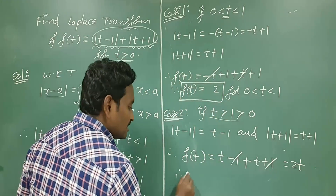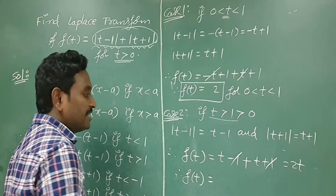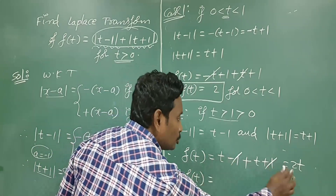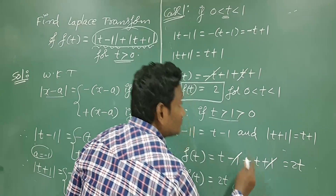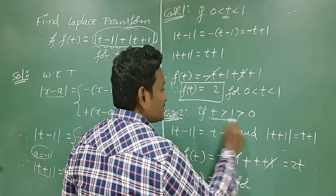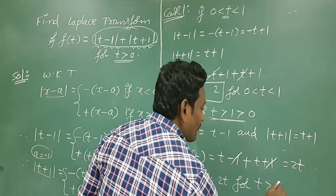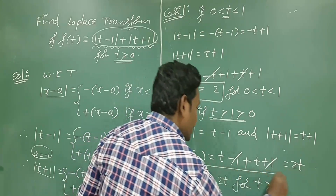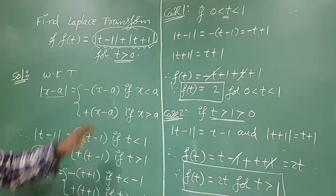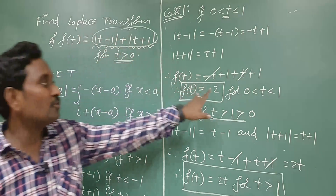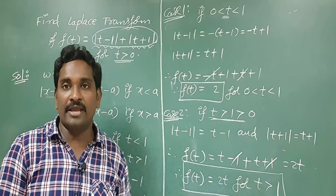So we observe that f(t) equals 2t for t greater than 1. Finally, we have to redefine the function f(t) in the range 0 to 1 and in the range 1 to infinity.